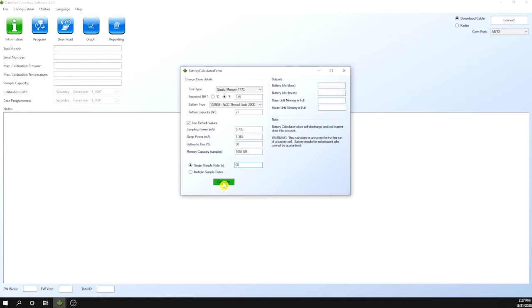In this case you can see that our quads memory gauges with 177 degrees C memory module should operate for 144 days at 315 degrees F with a 60 second sample rate.